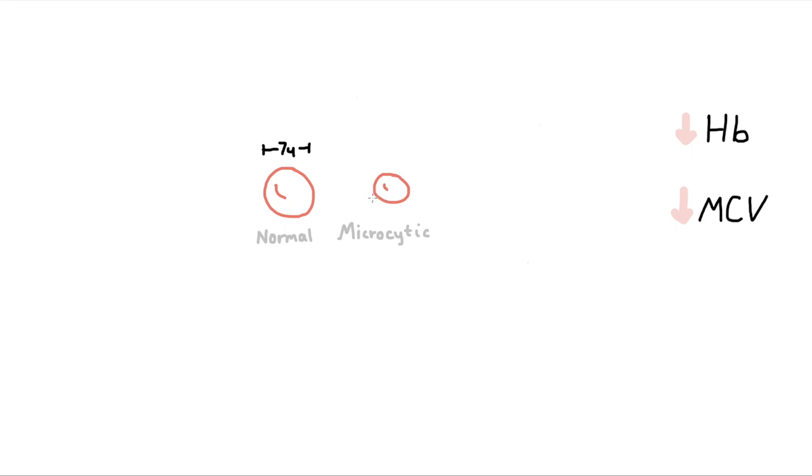The volume of a normal RBC is mostly made up of hemoglobin. If an RBC is small, it doesn't have enough hemoglobin, and in most cases, that's because we're lacking in a critical element required to produce hemoglobin. That's iron. So if we don't have enough iron, we don't have enough hemoglobin, and we have small RBCs.